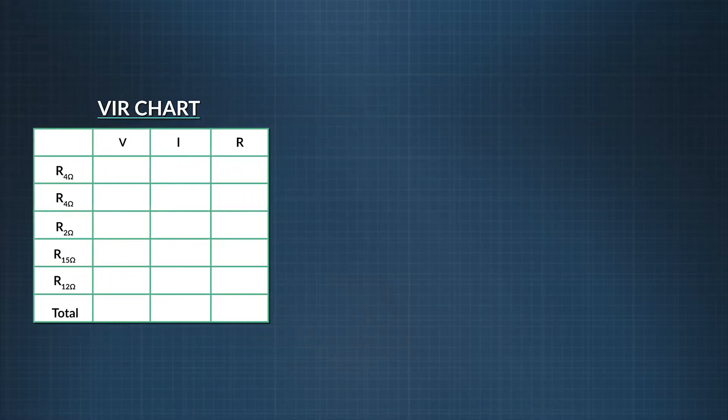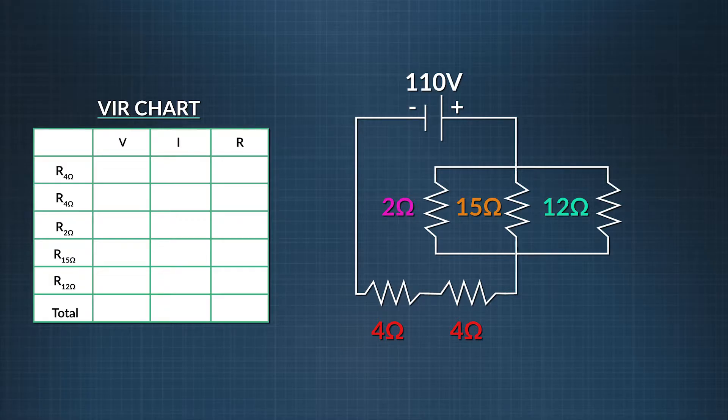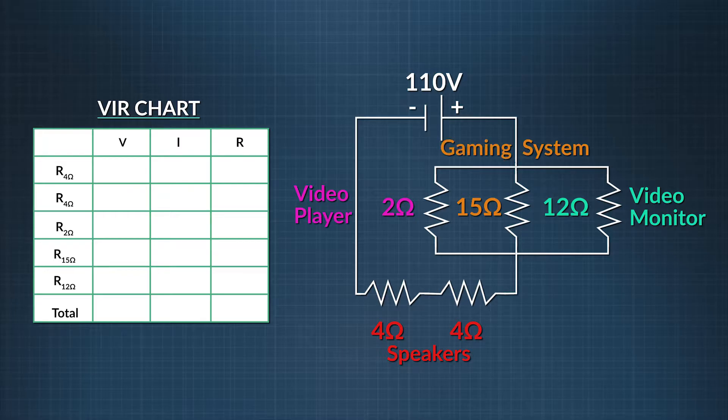Let's figure out a sample complex circuit. This is a general example. Let's find the current through and voltage across each resistor. We have our speakers, a video monitor, a video player, and a gaming system in this diagram. Let's fill in what we know. We can put all of our resistor values in the right-hand column. We know that our power source is 110 volts, so we can fill that in for the total voltage of the circuit at the bottom of the second column.